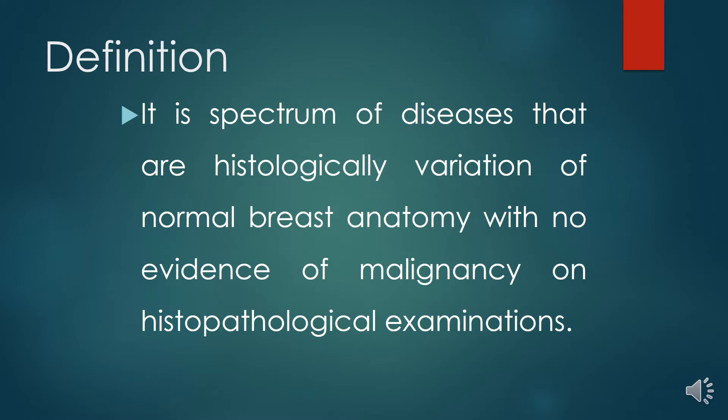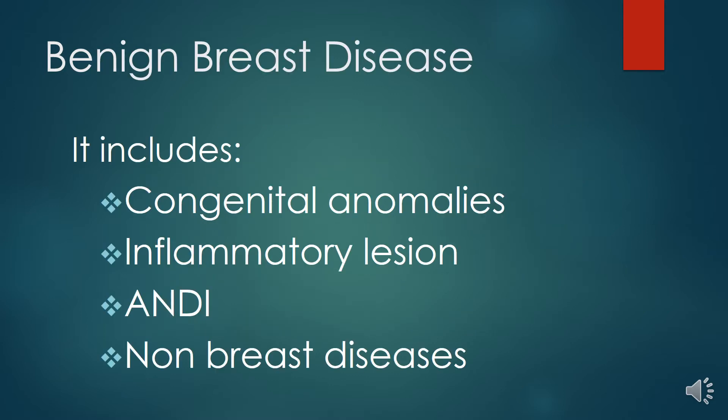Benign breast disease represents a spectrum of histologically variable conditions showing normal breast anatomy with no evidence of malignancy on histopathological examination. It includes congenital anomalies, inflammation, ANDI (Aberrations of Normal Development and Involution), and normal breast diseases.